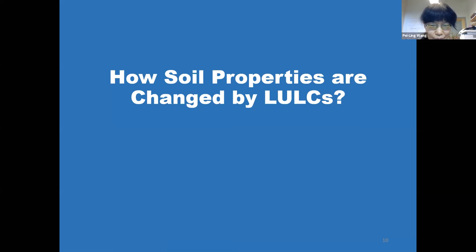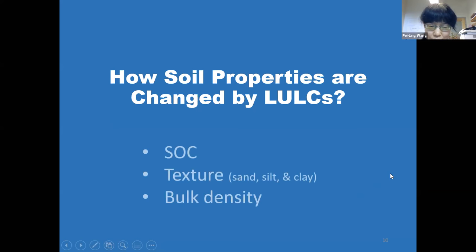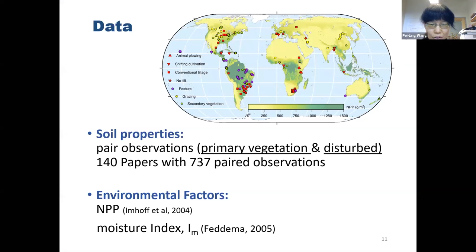The next question we want to ask is: how are soil properties changed by land use and land cover? We focus on soil organic carbon, texture, and bulk density because those properties affect soil hydrological properties. To answer this question, I read more than 1,000 papers to collect observations of soil samples under primary vegetation and disturbed conditions. Because I only wanted observations comparing to soil that has never been disturbed, and most studies compare to secondary vegetation which was disturbed in the past, I ended up with 140 papers with 700 paired observations. We also include a global dataset of mean annual precipitation (MAP) and moisture index.